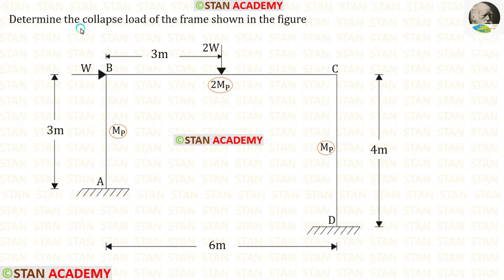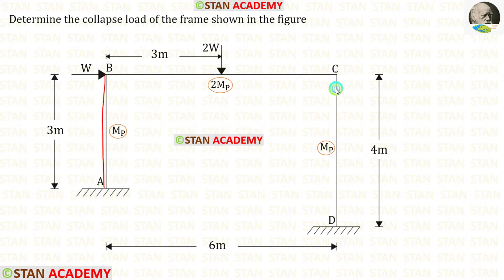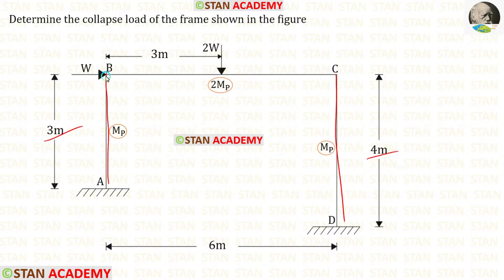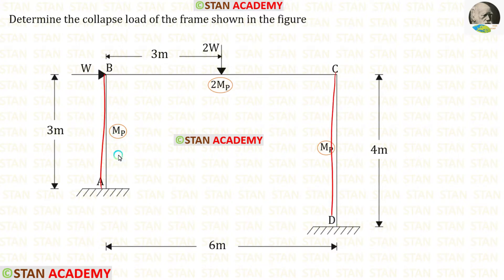In this frame, we are going to find the collapse load. There are two columns: column AB and column CD, and a beam BC. In the columns there are no loads. In the beam BC, we have a point load 2W acting in the center. In joint B, we have a nodal point load W. Column AB is 3 meters long, column CD is 4 meters long, and beam BC is 6 meters long. In this frame, we have different plastic moment capacities. For the columns, the plastic moment capacity is MB, and for the beam it is 2MB.